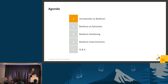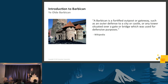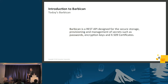Back in ye olde days, a Barbican was a defensive structure outside of a castle or city — a very effective defense until about the 15th century, where more advanced siege tactics and artillery became prevalent and they fell out of use. Today, Barbican is a REST API designed for the secure storage, provisioning, and management of secrets such as passwords, encryption keys, and TLS key pairs.